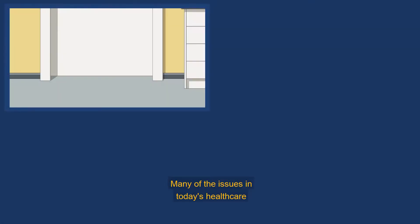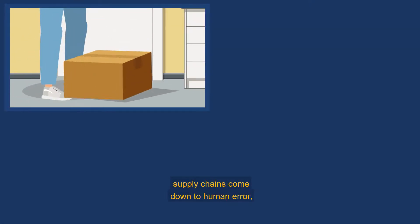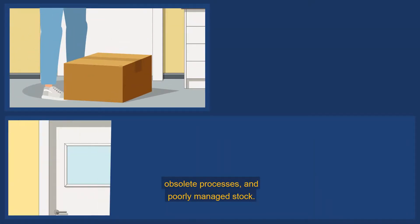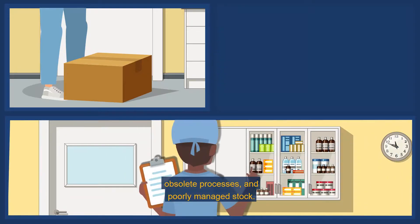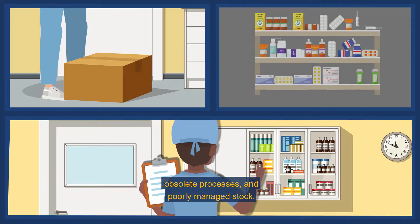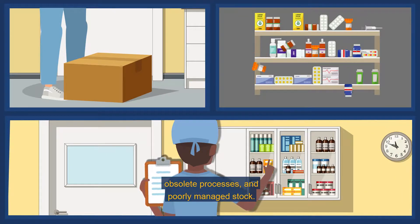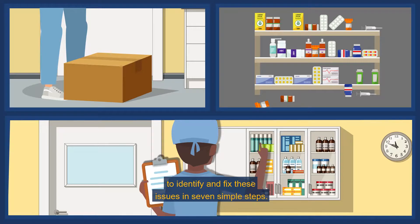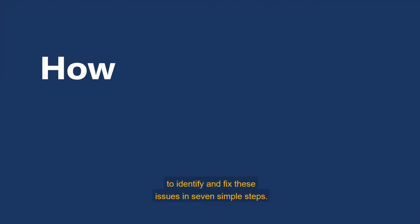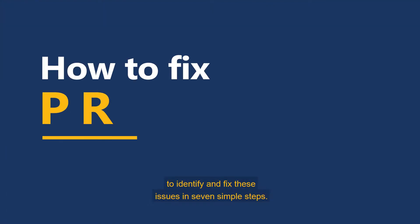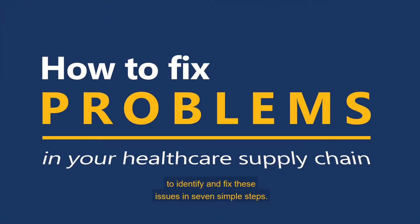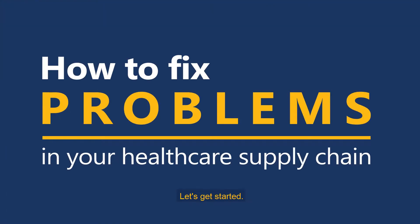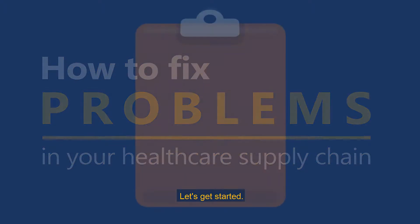Many of the issues in today's healthcare supply chains come down to human error, obsolete processes and poorly managed stock. In this video we'll show you how to identify and fix these issues in seven simple steps. Let's get started.